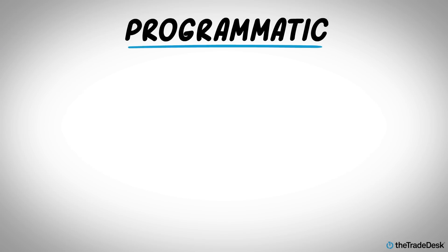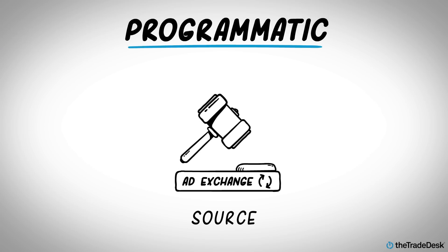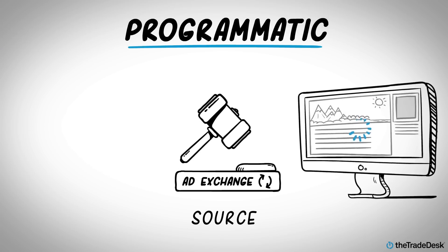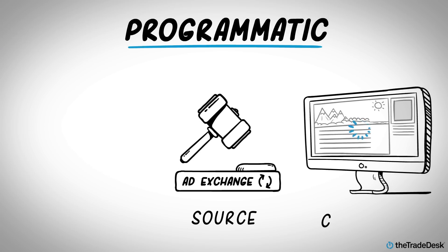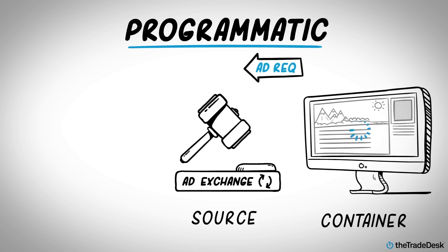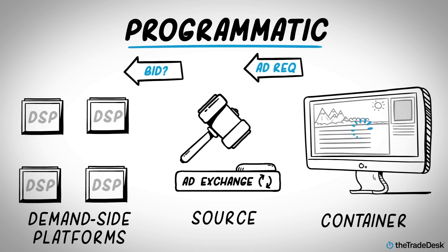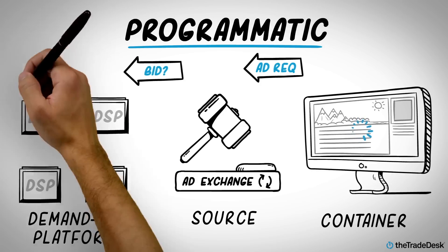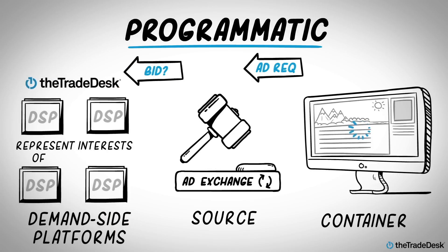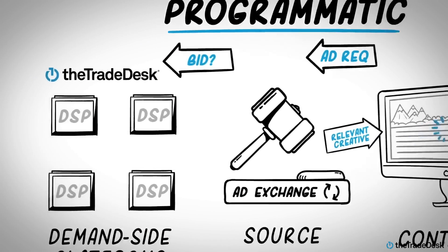In Programmatic, the container source is an independent advertising exchange. When the page is loading, the container, or ad space, is rendered, and a request for an ad is sent to that exchange. The exchange sends the request for bids to all registered demand-side platforms, or DSPs, which are companies like the Trade Desk that represent the interests of advertisers, to fill the ad slot with creative that is relevant to the audience at that exact moment.